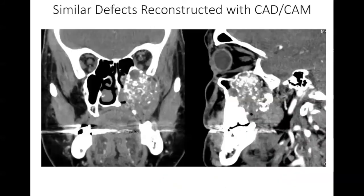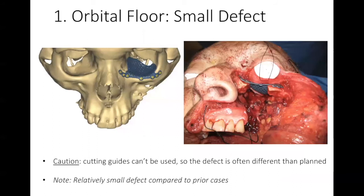Here is a similar defect reconstructed with CAD-CAM technology — not quite as large, but it provides an example of leveraging this new technology. We should note that cutting guides cannot be used inside the orbit, so it is often difficult to predict what the defect will be once the ablative surgeon is done. I had good preoperative communication with our head and neck surgeon and felt comfortable going ahead with a 3D printed plate for this small defect. I would not recommend printing a plate for a larger defect where the margins are unpredictable and the size of the resection cannot be reliably assessed preoperatively.